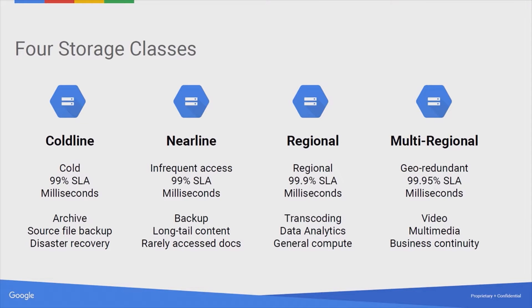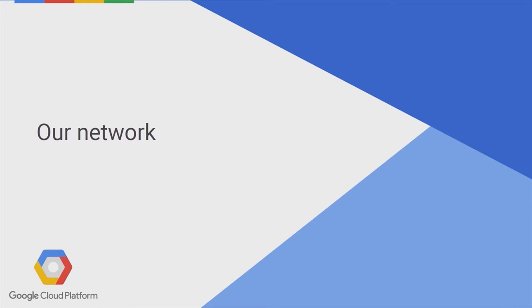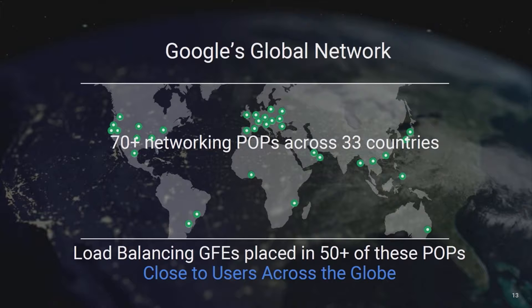Depending on the kind of file you want to store — whether it's backup files, disaster recovery scenarios, or files that are rarely accessed, like the long tail where 10% of your files are accessed daily and 90% are almost never accessed — you can save those as Nearline, regional, or multi-regional, depending on your deployment needs. These are features you can have from the public cloud out of the box without doing anything extra.